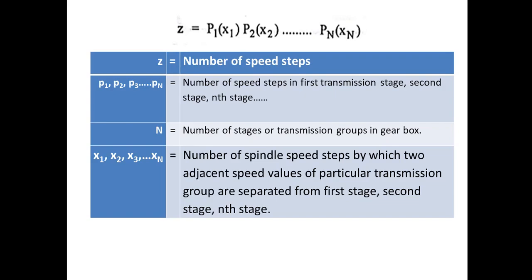This is the formula: Z = P1(X1) P2(X2) P3(X3)...Pn(Xn) where Z is number of speed steps. Suppose there is a 6 speed gearbox then Z is 6, there is a 9 speed gearbox then Z is 9. P1, P2, P3, Pn are the number of speed steps in first transmission stage, second transmission stage, third transmission stage, nth transmission stage.